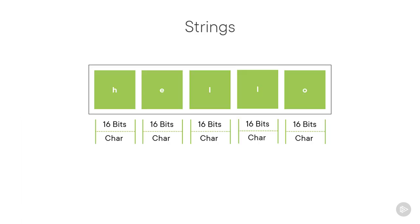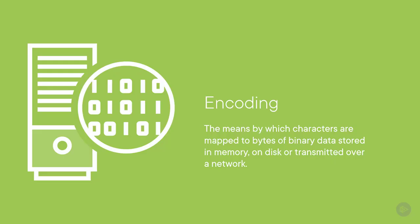Let's take a few minutes to discuss character encoding in .NET applications. In .NET, strings are logically a sequence of 16-bit values, each of which is an instance of the char struct. The length of a string indicates how many characters it contains. Encoding describes how these characters are mapped to bytes of binary data, stored in memory, on disk, or transmitted over a network.